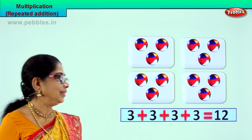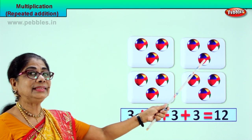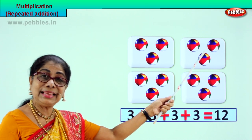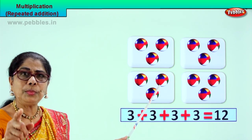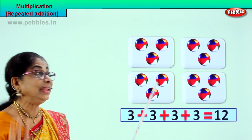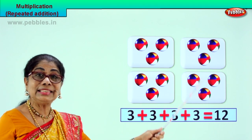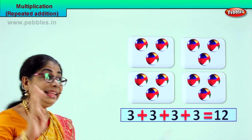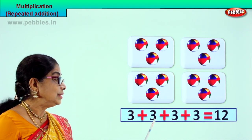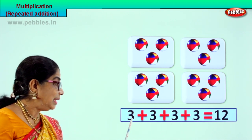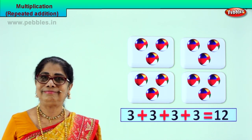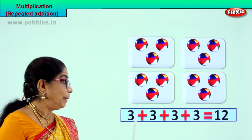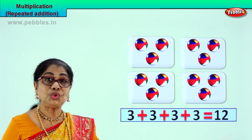How many boxes? Four boxes. Multiplication is repeated addition, so we write three plus three plus three plus three. Equal to how many? Three, six, nine — answer? Twelve. Three plus three is six, six plus three is nine, nine plus three is twelve. Counting in threes: three, six, nine, twelve.